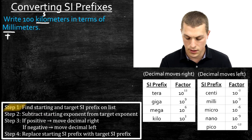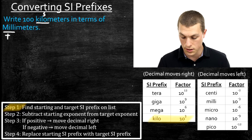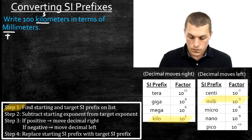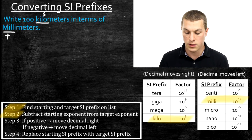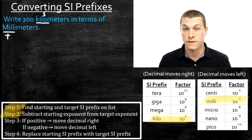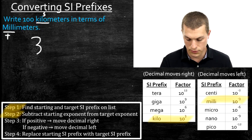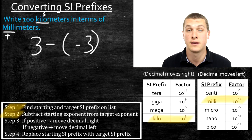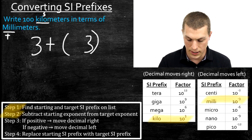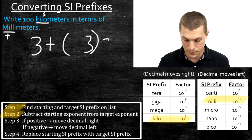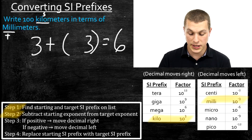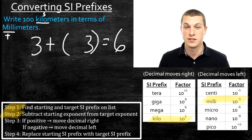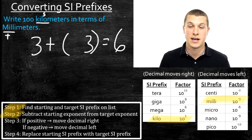We can identify those in the list. Kilo is 10 to the 3rd and milli is 10 to the minus 3rd. Following step two, we subtract the starting exponent from the target: 3 minus a negative 3 — using parentheses to keep track of our sign. Subtracting a negative means it's really positive, so that's 3 plus 3, giving us 6. What you're really doing is figuring out how many times to move the decimal; if you can see you're going from positive 3 to negative 3, you'll move it 6 times.